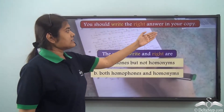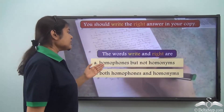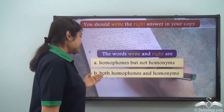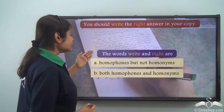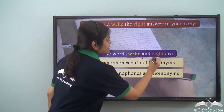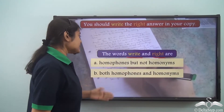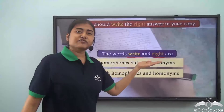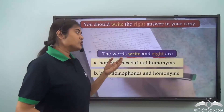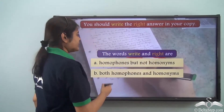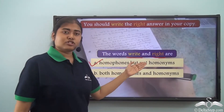You should write the right answer in your copy. Now the words 'write' and 'right' — are they: A) homophones but not homonyms, or B) both homophones and homonyms? Well, 'write' and 'right' have the same pronunciation so they are definitely homophones, but they have different spellings. So can we call them homonyms? No, because for homonyms you also need to have the same spelling. So the correct answer is: 'write' and 'right' are homophones but not homonyms.